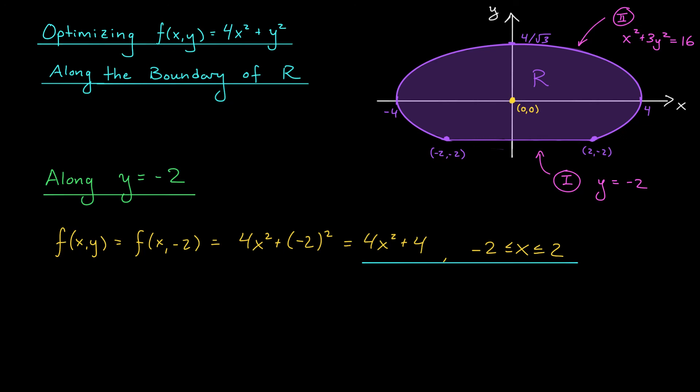Okay, we've reduced this portion of the problem to maximizing and minimizing a single variable function over a closed interval, something you learned how to do back in Calc 1. Now, we could try taking the derivative of this expression and setting it equal to 0 to locate any critical points. But in this case, I think it should be clear that the only critical point is going to occur when x is 0. After all, this equation describes a parabola, a parabola with a vertex at x equals 0. Since the only critical point of a parabola occurs at its vertex, x equals 0 is going to give us our only critical point. Our critical point is (x,y) equals (0, -2).